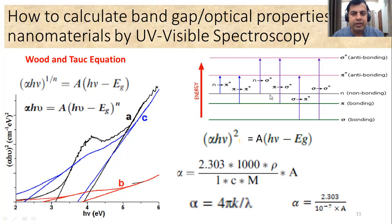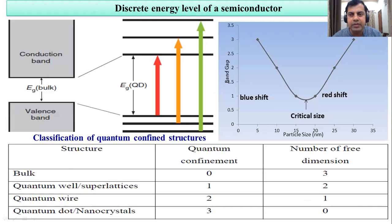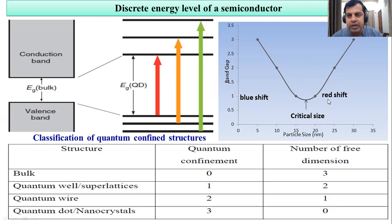I will demonstrate how to calculate the band gap of nanomaterials using a very useful calculation. The dependence of the band gap on the size of the nanomaterial is very important. I have shown the behavior between the band gap and the particle size. If you reduce the size of the nanomaterial, there is a simultaneous decrease in the band gap. This is called the redshift, and it happens up to a certain particle size — this is called the critical size — which varies from material to material.